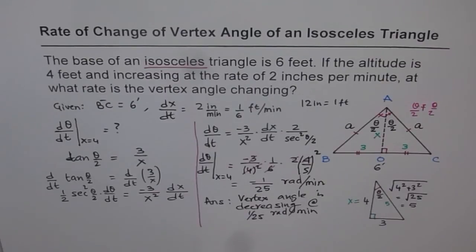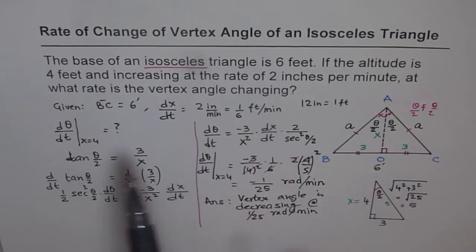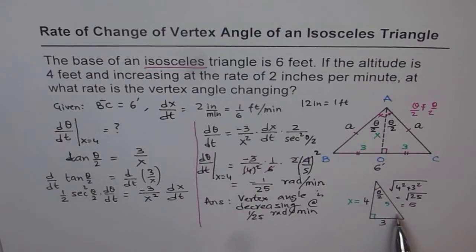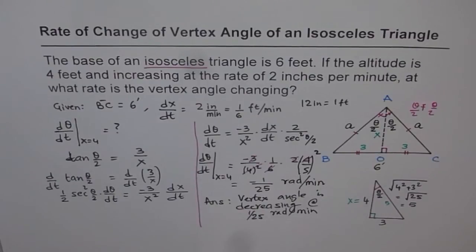The approach: first, make a related diagram and understand what is given and what we need to find. Once we know what is needed, make another diagram at that specific instance so that all required values are known — in this case, a small triangle with sides 3, 4, and 5. Then differentiate both sides with respect to time and get the answer. Thank you and all the best.